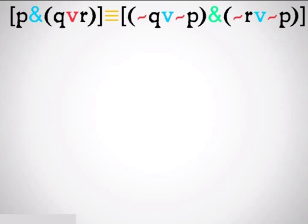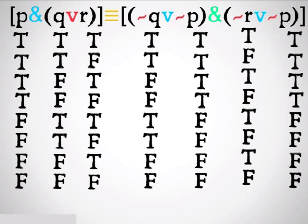Finally, we have this big monster of a proposition: P and Q or R is materially equivalent to not P or Q, and not R or not P. That's a monster of a proposition. The first thing we're going to do is fill in our truth tables under each of the variables. This is a bit longer — we need eight possible worlds because we have three different variables. That's just two to the third, or two to the N, where N is the number of variables.